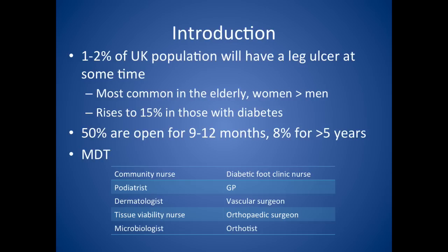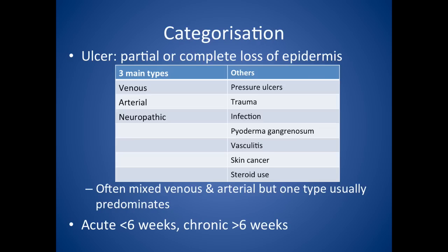You're not always going to be involved with all those team members — it really depends on the type of ulcer you're dealing with. An ulcer means partial or complete loss of epidermis. There are three main types: venous, arterial, and neuropathic. You can also get pressure ulcers, trauma, infection, pyoderma gangrenosum in those with inflammatory bowel disease, vasculitides, skin cancer, and steroid use. Very often ulcers are mixed, most often venous and arterial, but usually one type predominates.